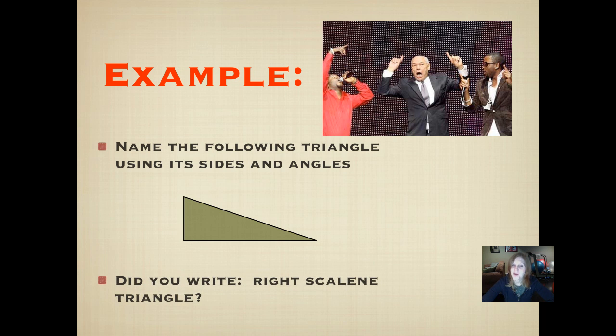Did you write right scalene triangle? You can definitely see that right angle in there. Did you hold your paper up to it, the corner of your paper, to see if that was a right angle? And then you can use your pencil to check the lengths of the sides, and they are all different. So we have a right scalene triangle.